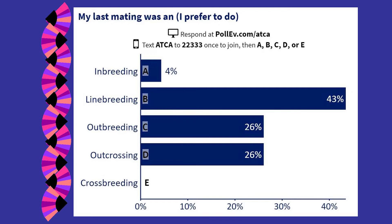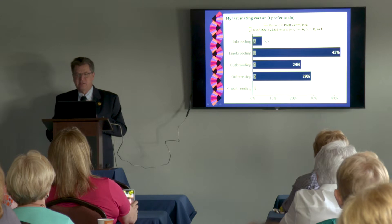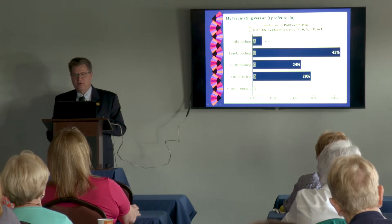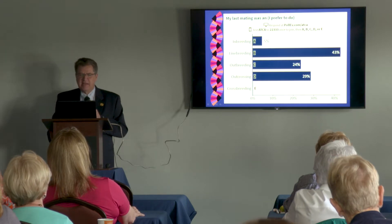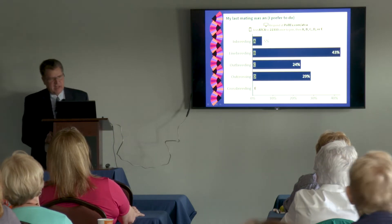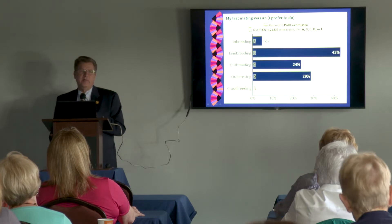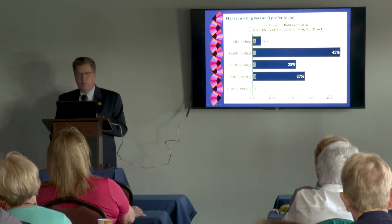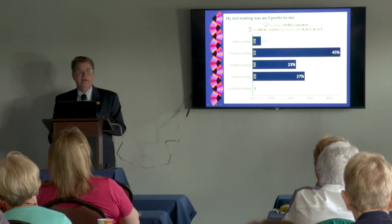5% of you put down inbreeding, 43% put down line breeding, about 24-27% put outbreeding, and 29% put outcrossing. The majority of you do line breeding, which is probably correct. As a breeder, inbreeding means father-daughter, full brother-full sister — very close breeding. Whereas to a geneticist, inbreeding is a number, a coefficient. Every single mating in a purebred has some inbreeding involved that we can put a number on.